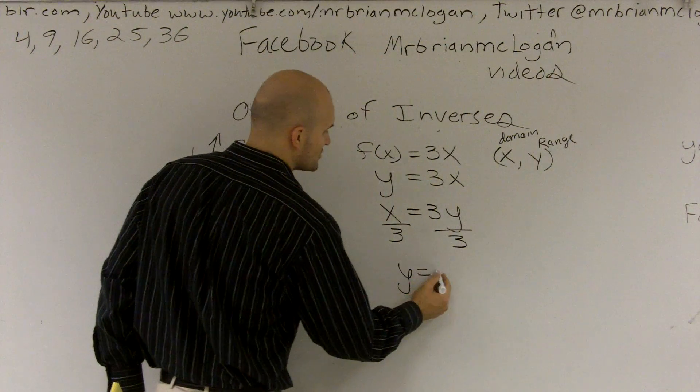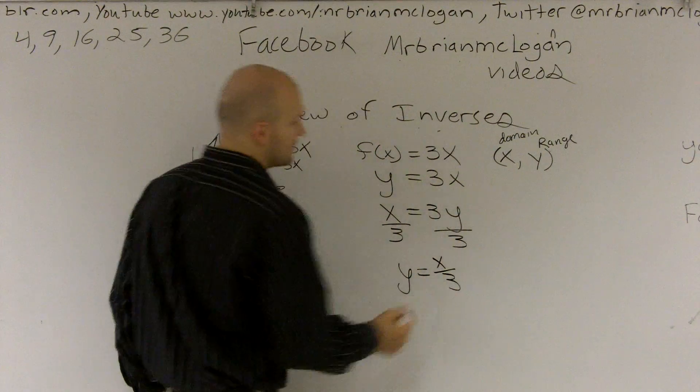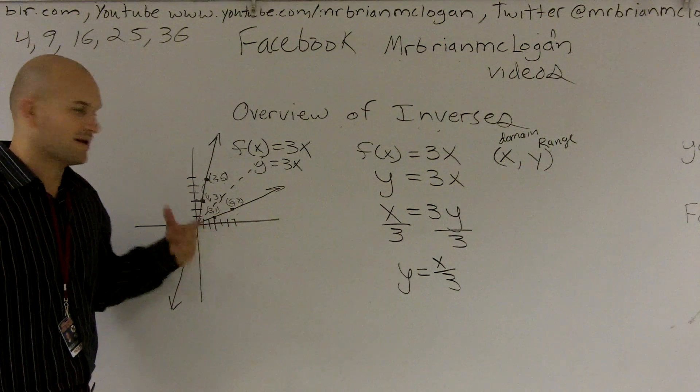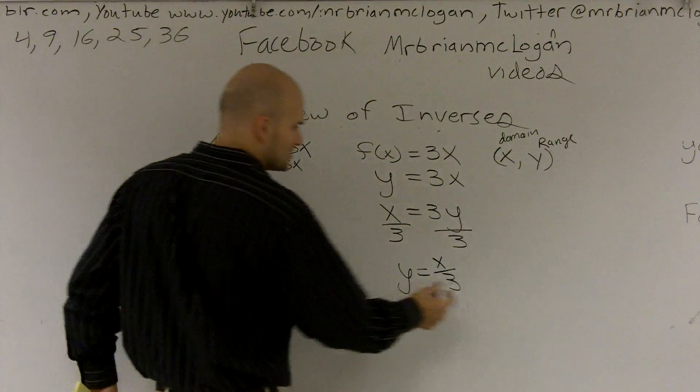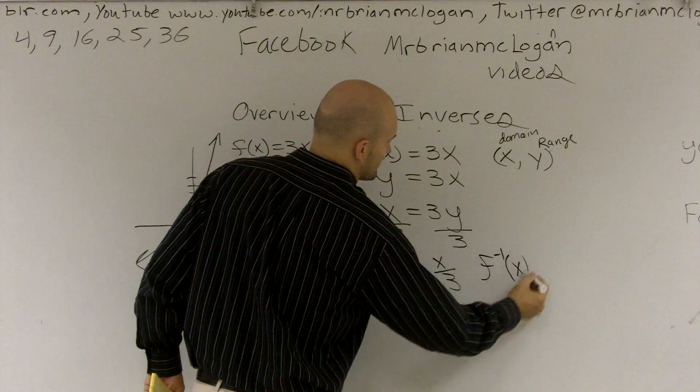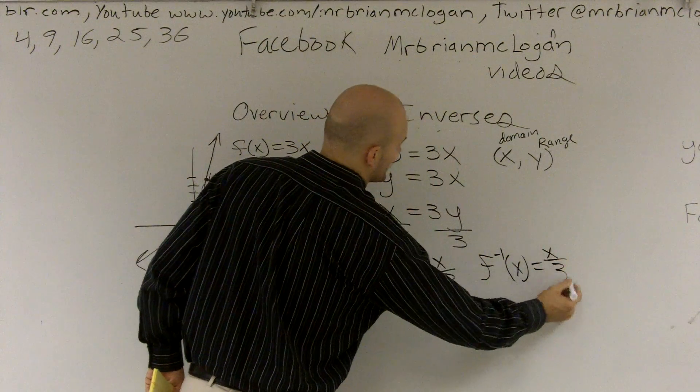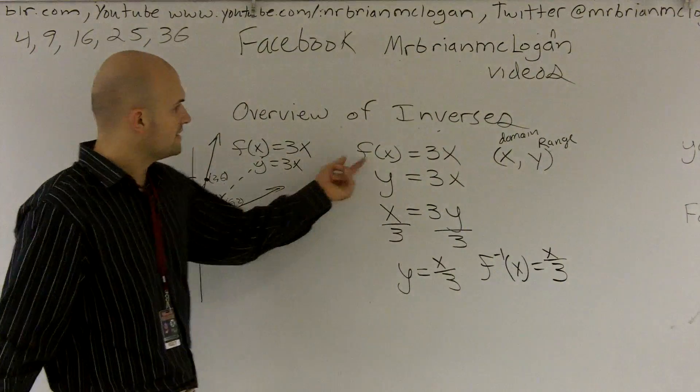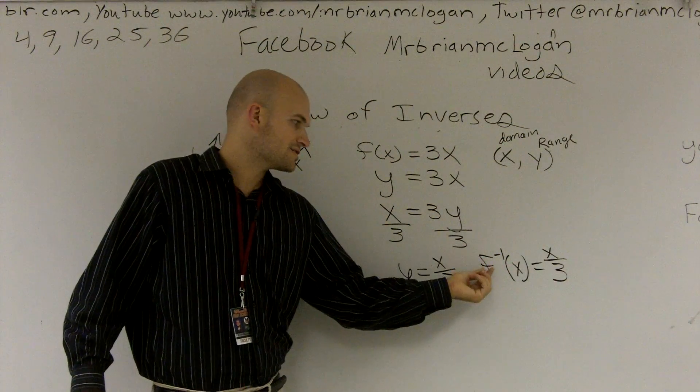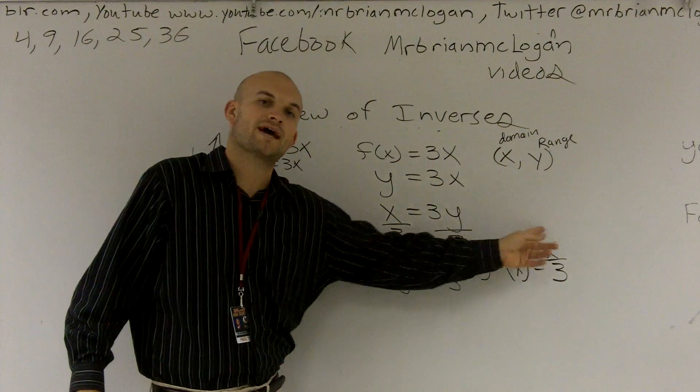So I need to undo my operation. I'm going to divide by three. Therefore, I get y is equal to x over three. So that would be my graph, which is this right here. But I need to put it in my inverse notation. So we write f inverse of x equals x over three. Therefore, you guys can see the function f of x equals three x, and the inverse is going to be f inverse of x is equal to x over three.